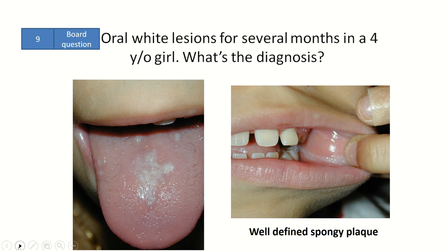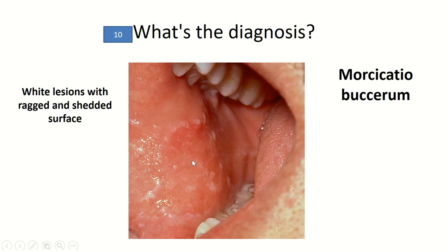Question 10: What's the diagnosis? There are white lesions with a ragged and shaded surface, indicative of leukoedema buccae. This finding commonly involves the oral cavity bilaterally.